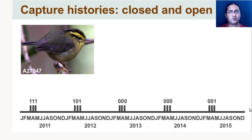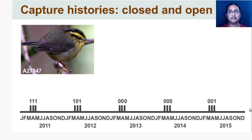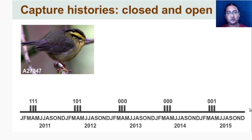One way to use mist netting to track populations over time: you go every year in the breeding season — April and May — and sample the habitat for three consecutive days, then come back the next year in April-May and sample again for three consecutive days, and so on for every year. The data collected form what's called a capture history. For example, bird A27047 is an individually identified bird: in 2011 it was caught on days one, two, and three; in 2012 caught on day one, not day two, and caught on day three; in 2013 and 2014 it was not captured at all despite three days of sampling; and in 2015 it was captured only on the last day.